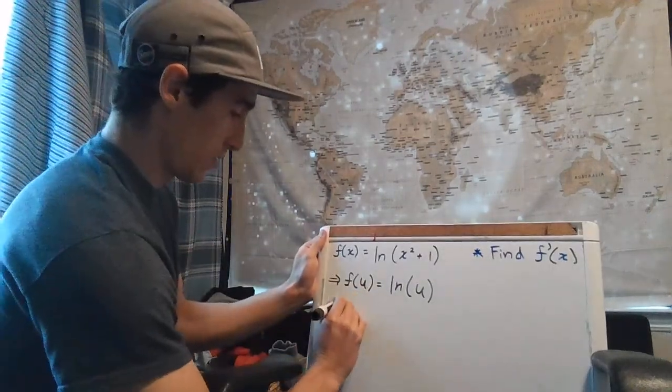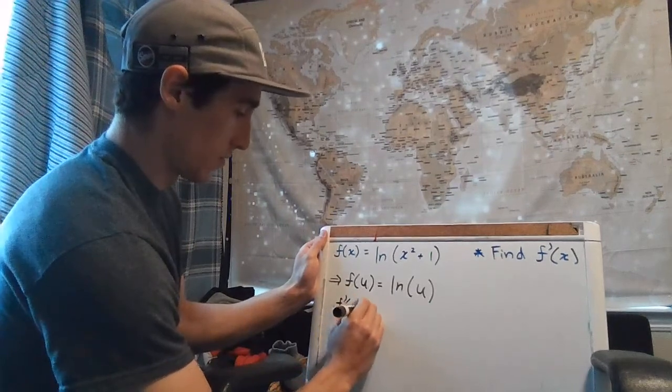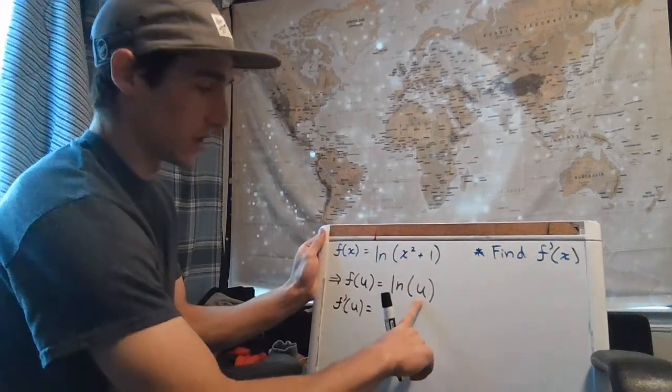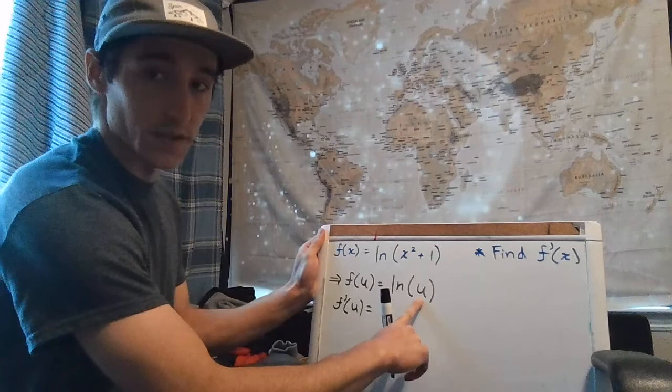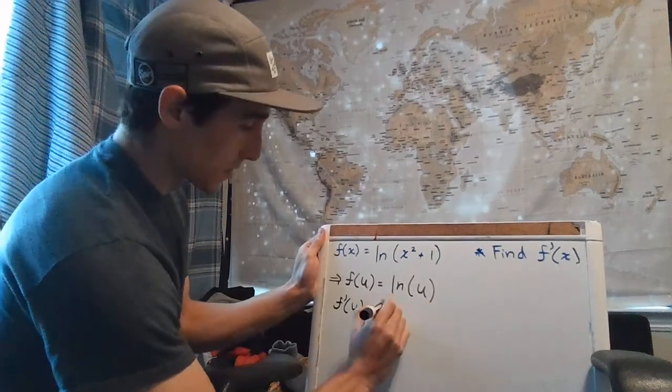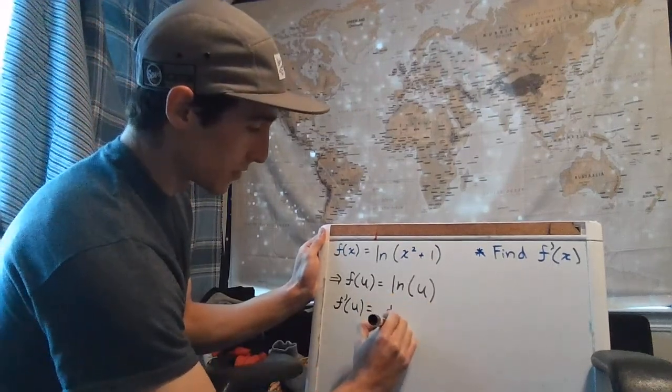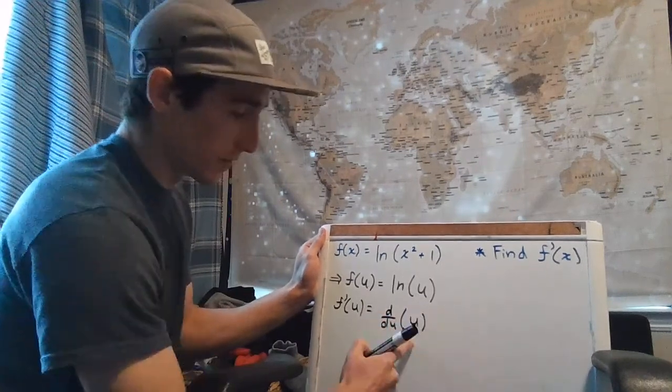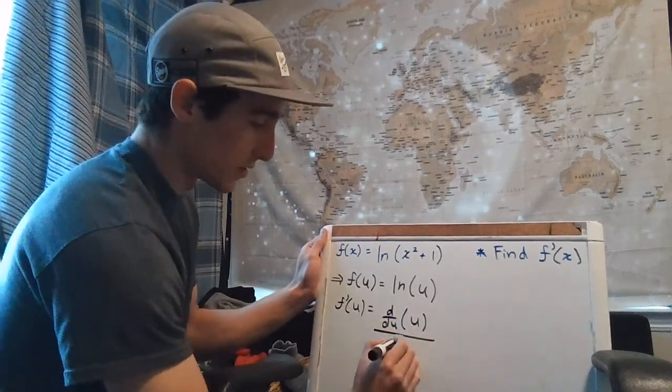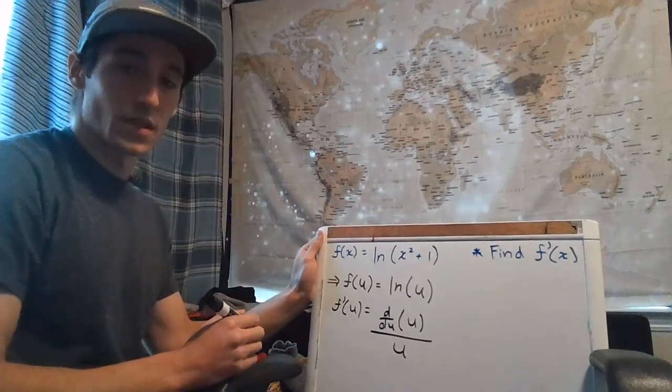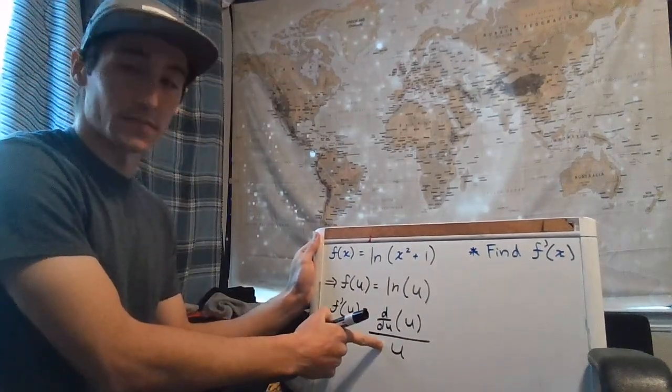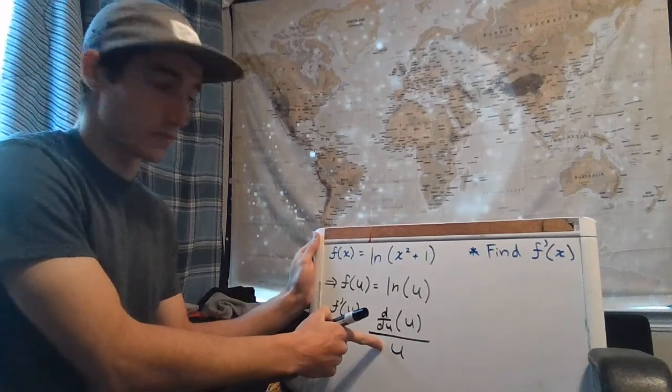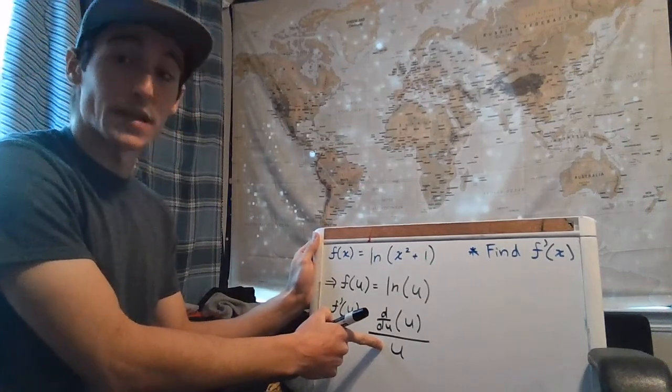What you're going to do is take the derivative of whatever is on the inside, and then just divide it by, again, whatever is on the inside. And that's it.